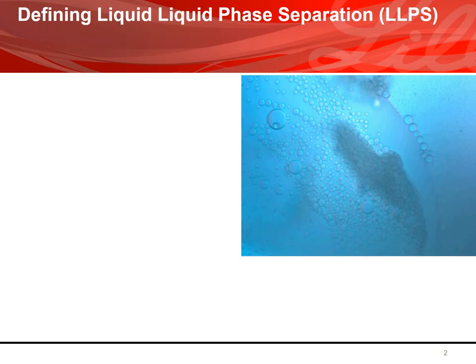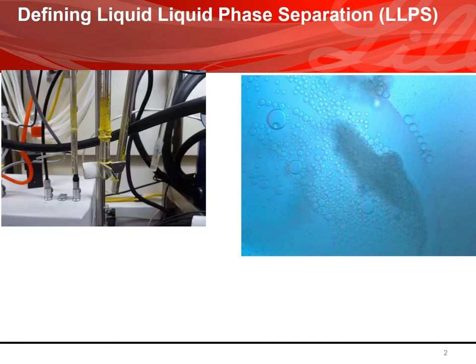Liquid-liquid phase separation, or demixing phase, is commonly known as oiling out. In the pharmaceutical industry, it's often encountered by chemists when they develop a synthetic route for an API. It describes the presence of oil droplets in a continuous phase. From a process perspective, it is an undesired phenomenon as it leads to the formation of an impure sticky amorphous solid — the opposite of a controlled crystallization process — and on scale-up it can also damage equipment.